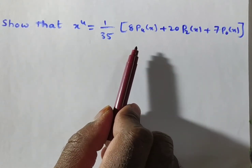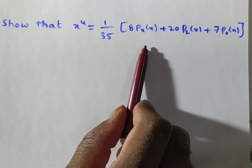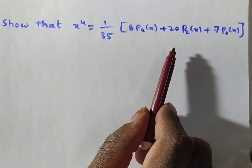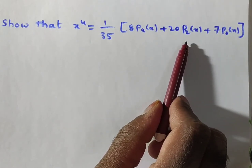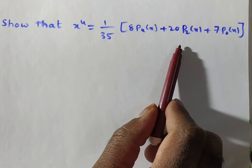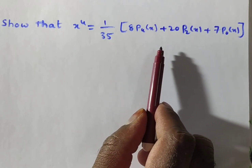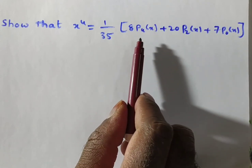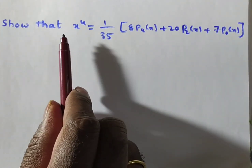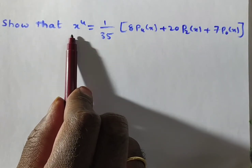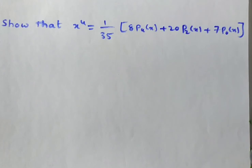Friends, till now we have done problems on Pₙ(x) expressed in terms of algebraic polynomials — like P₀ = 1, P₁ = x, P₂ = 1/2·(3x² - 1), P₃ = 1/2·(5x³ - 3x), and P₄ also in terms of x⁴. But what we are doing now is expressing the algebraic function x⁴ in terms of Legendre polynomials.